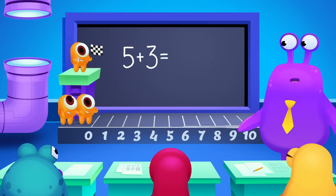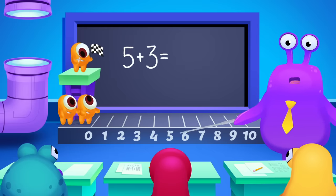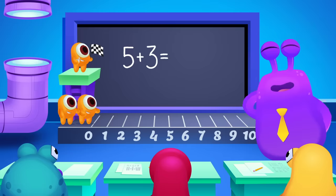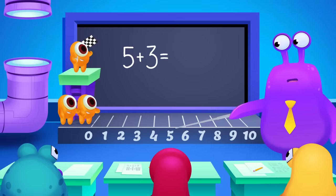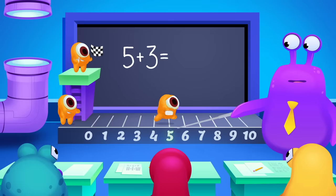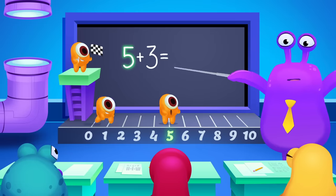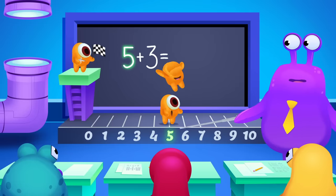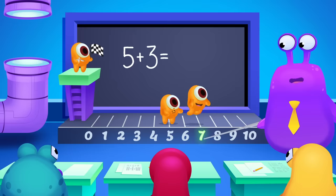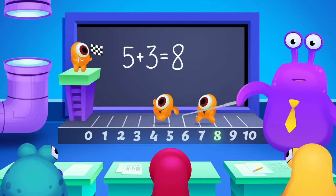What is 5 plus 3? We can solve the problem by counting on. We start with the bigger number, 5. And then we count on: 5, 6, 7, 8. Well done!